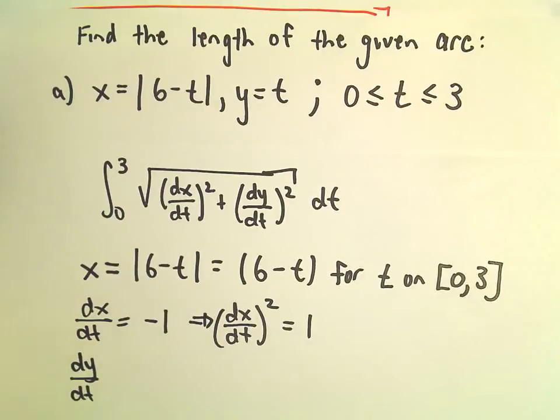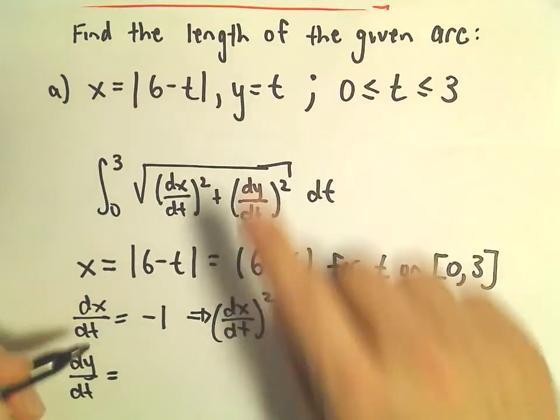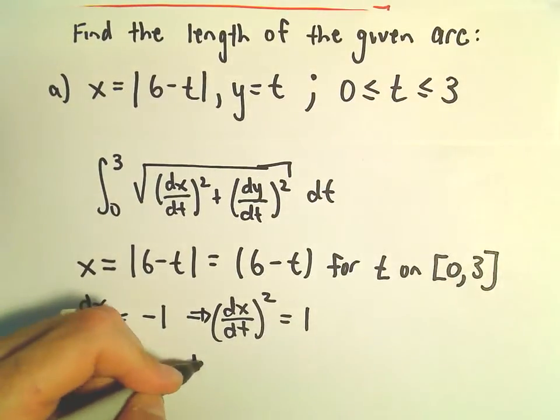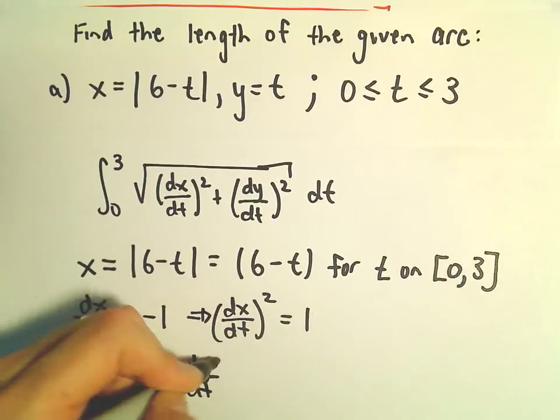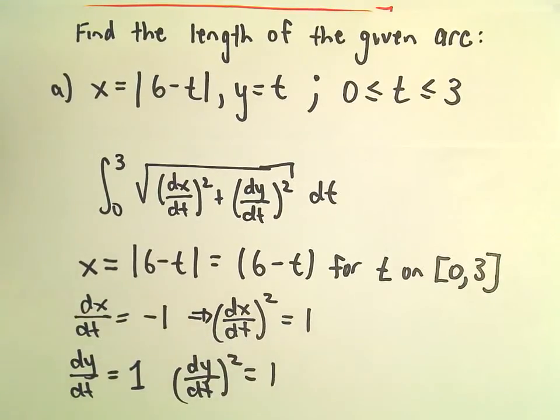The derivative of y with respect to t, that's also just going to be positive 1. So the derivative of y with respect to t squared will also just be positive 1.